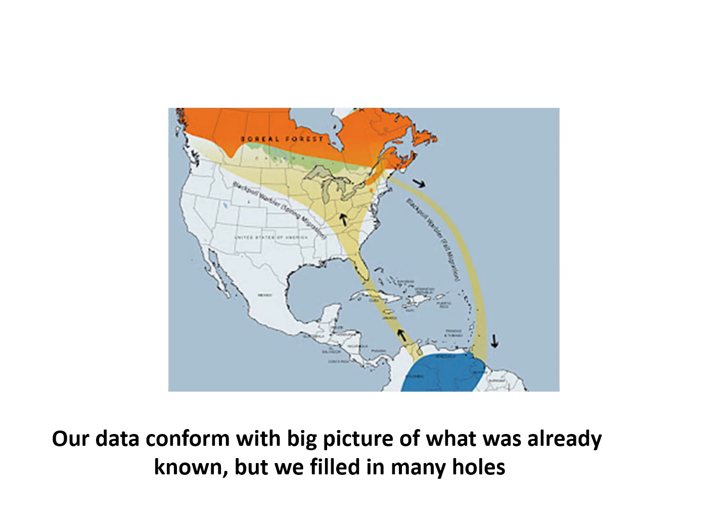In spring they come up through the Caribbean and enter the U.S. through Florida and a little further west on the Gulf Coast, then make their way across the U.S. into the breeding range. Our data fit this picture very well, but we could also provide more detail, especially in the spring.